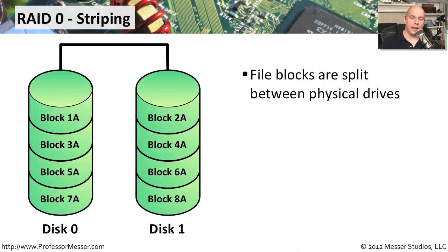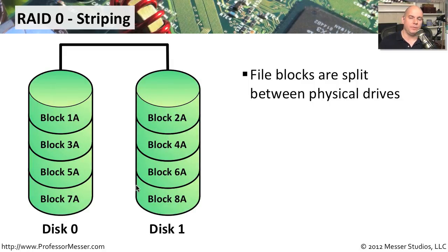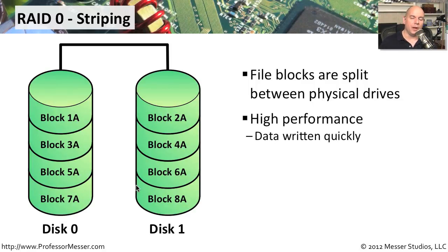The first RAID type is RAID 0, also referred to as striping. We take a single file or block of data and stripe it across multiple drives. Using two drives as an example, a single file is split into small blocks — one block goes to one drive, the next to the other, alternating so the same file is split between all the disks.